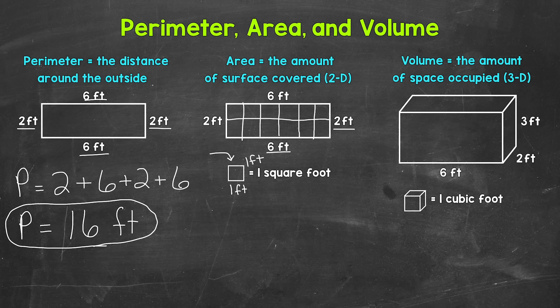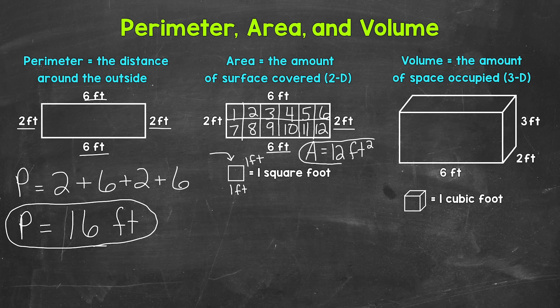Now we have the square feet that this rectangle covers. So how many square feet does it cover? One, two, three, four, five, six, seven, eight, nine, ten, eleven, twelve. So the area of this rectangle is 12 square feet. For area, we put that two there — our unit of measure, feet, to the power of two, to represent square feet. The exponent only applies to the unit of measure, not the number.